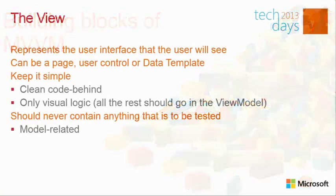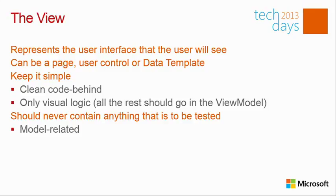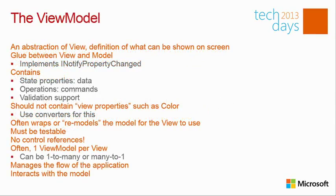Looking at the MVVM building blocks: the View is the visual part — the XAML that contains data binding code binding on state and operations exposed by the ViewModel. It should be clean and simple. There can be code in the code-behind — it is not a sin. Code in the code-behind should interact with the view only: things like setting focus, animations — that is purely view code. We'll see in the sample that I have some code-behind that doesn't interact with my model.